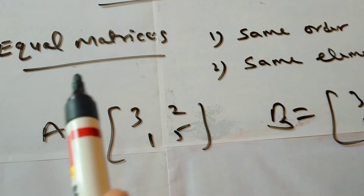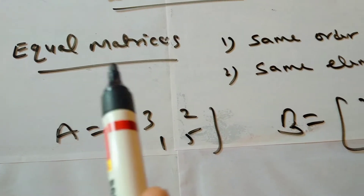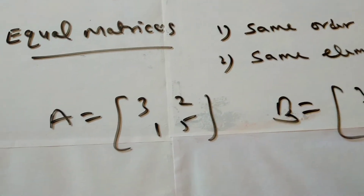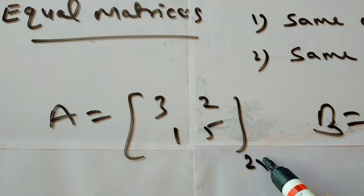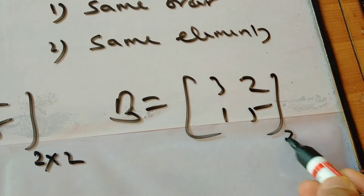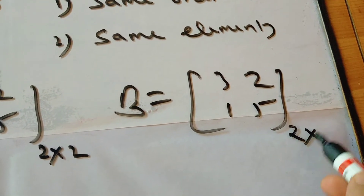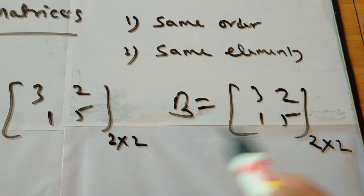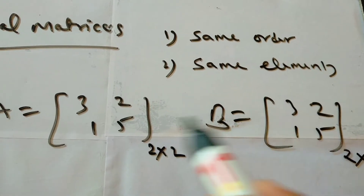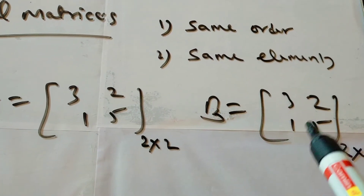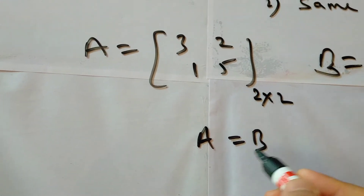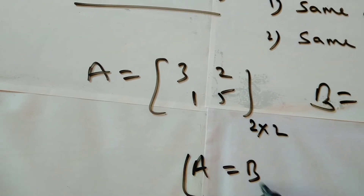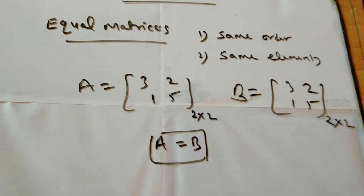Now, equal matrices: if two matrices are equal, they must have the same order. For example, matrix A has order 2 × 2, and matrix B also has order 2 × 2. Their elements are also the same — 3, 2, 1, 5 in both. So we can say A is equal to B. This is the concept of equal matrices.